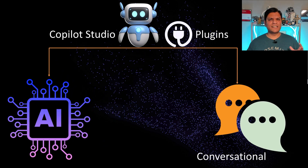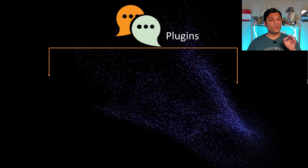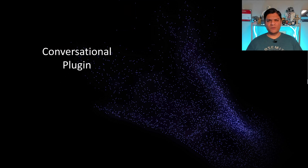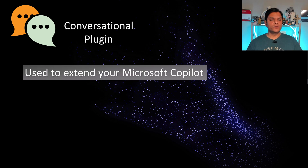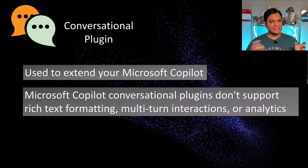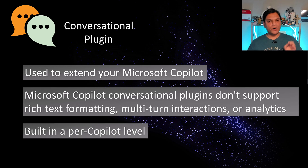We took a look at both different types of plugins. Now I want to highlight some that almost sound the same but are not — the conversational plugin versus the plugin action. The conversational plugin is used to extend to your Microsoft Co-Pilot. You create it in Co-Pilot Studio and extend it into Microsoft 365 Co-Pilot. There are some limitations right now — for example, it does not support rich text formatting or multi-turn interactions, and it can only be built at a per co-pilot level.